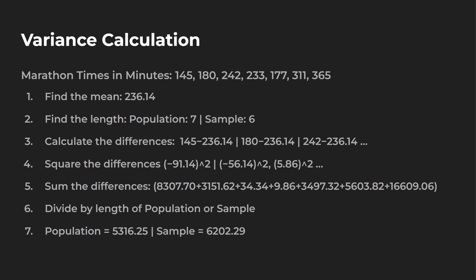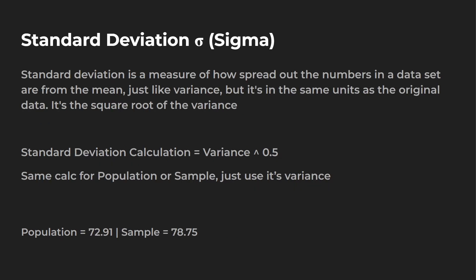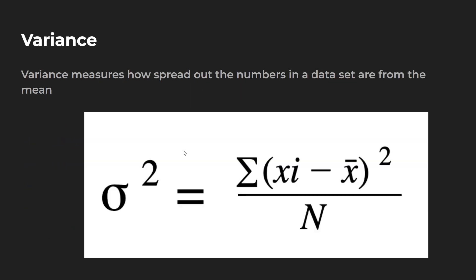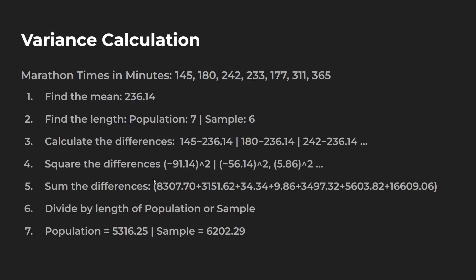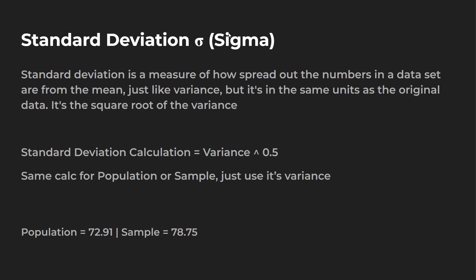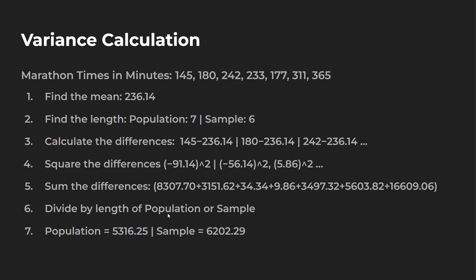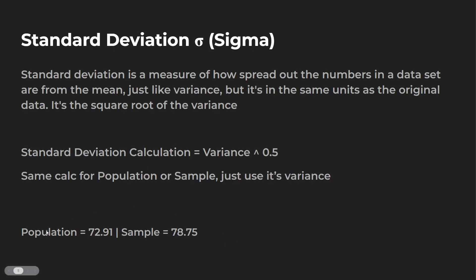It might take a few tries to understand this, but you'll get it quickly. Now, standard deviation uses the symbol sigma. To calculate it, all you do is take the square root of the variance — raise it to the 0.5 power. It's in the same units as the original data. The formula is the same for population or sample: take the respective variance and square root it. Population standard deviation is 72.91, and sample standard deviation is 78.75.